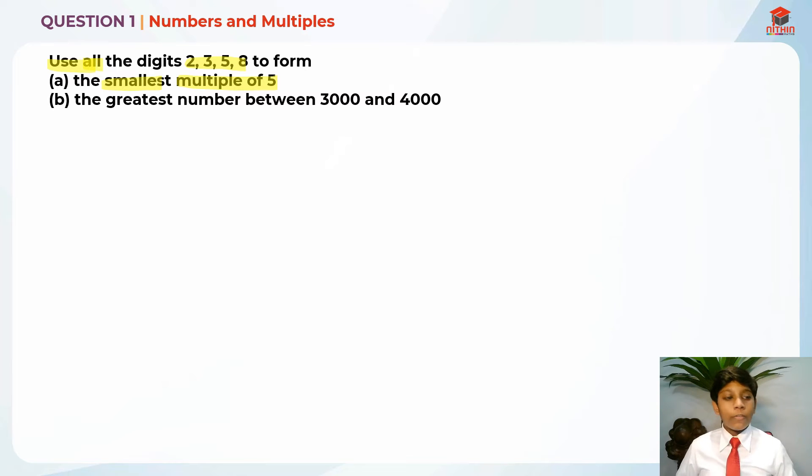So a multiple of 5 either has a 5 at the end or a 0 at the end. These are the only possible.